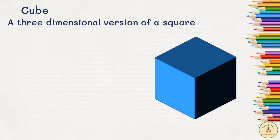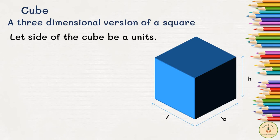Now for a cube, we again have length, breadth, and height, but since it is a three-dimensional version of a square, all these dimensions are equal. So let us assume that the side of a cube is 'a' units. This 'units' can be meter, centimeter, or any such unit used to measure length of an object.